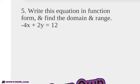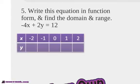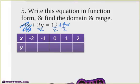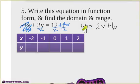Write this equation in function form and find the domain and range. We have negative four x plus two y equals 12. Remember, you've got to get everything away from the y using order of operations in reverse. First, add four x to both sides — those terms cancel, leaving two y equals 4x plus 12. Then divide everything by two. Our new equation in function form is y equals 2x plus 6.